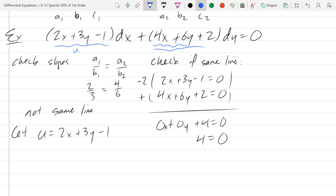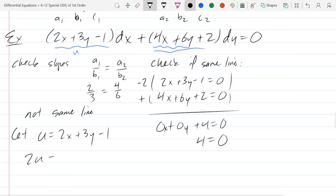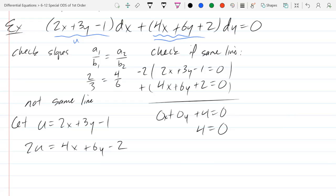So I'll underline that guy twice. So let's figure out, so if I chose u to be that, 2u would equal 4x plus 6y minus 2. And how would I turn that minus 2 into a plus 2? So I'll just add 4 to both sides right here. So I'm going to go plus 4 plus 4 to both sides, 2u plus 4 equals 4x plus 6y plus 2. So any questions on that algebra there?